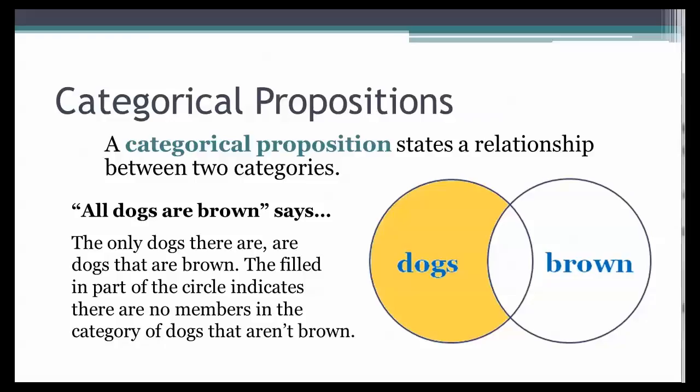Of course, we all know that there are dogs of other colors. But by being clear about what the proposition actually says, we are in a better position to test the accuracy of our category. If we can find a dog that isn't brown, we would know the proposition is false and the categories aren't defined properly yet.